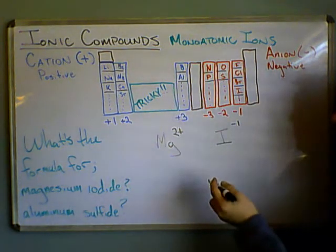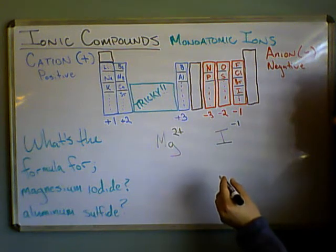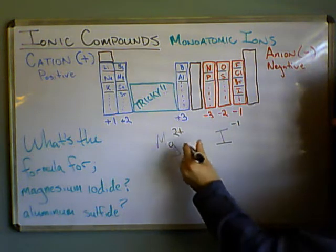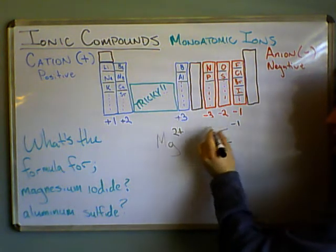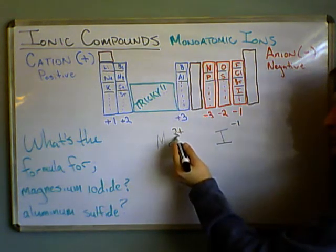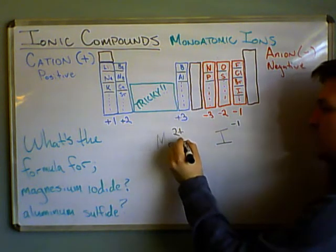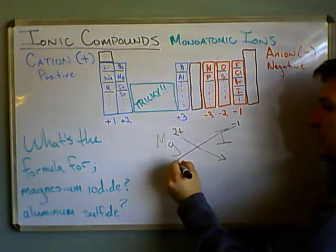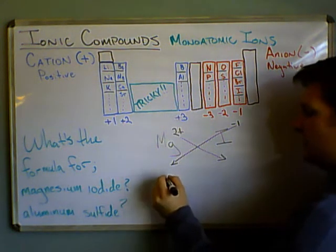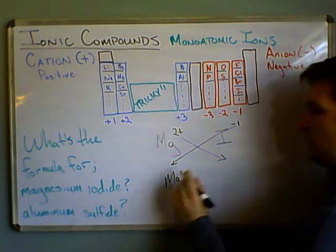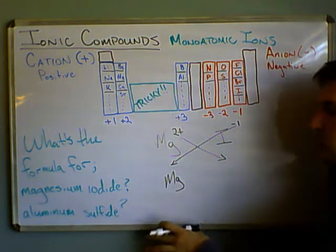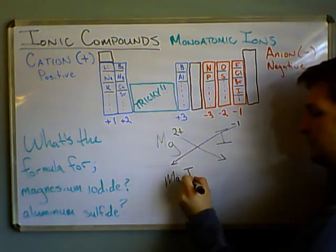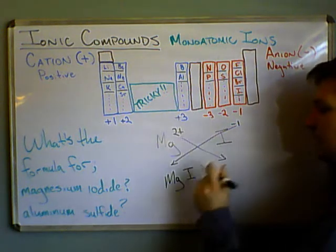So now there's a lot of different ways people do this. I think it's the easiest way is if you don't have like charges, if the charges are different, so we have different charges here, then I just switch these numbers. I put this number there and that number there. And so now I have Mg, a 1, but remember we don't write the 1 if it's a 1. And then I2, because this 2 came down and we'll put it there.